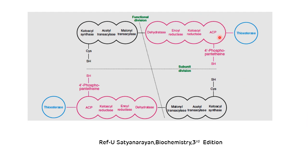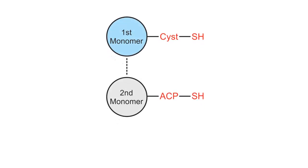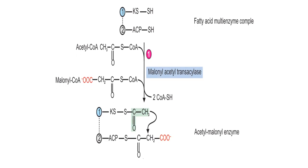Now let's see the steps carried out by the fatty acid synthase multi-enzyme complex. The first step is the attachment of the acetyl group to the sulfhydryl group of ketoacyl synthase and malonyl to the sulfhydryl group of acyl carrier protein, catalyzed by malonyl-acetyl transacylase. This leads to synthesis of the acetyl-malonyl enzyme, also called acetyl-malonyl acyl carrier protein.